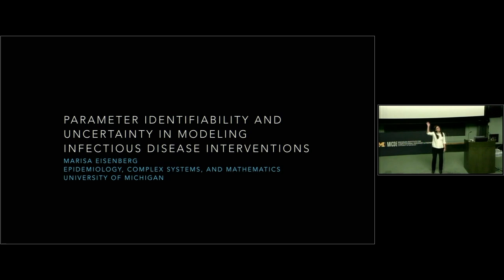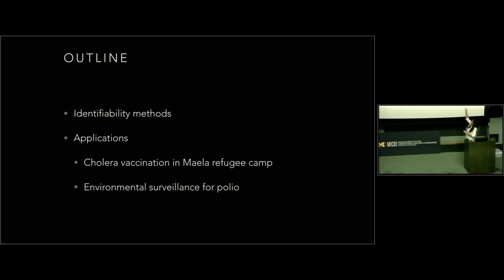So how many people are familiar with identifiability as a thing? A couple, but mostly not — okay, I like to get a sense of how to pitch it. So we're going to talk about identifiability, and then we'll talk about two specific applications: one on cholera vaccination in a refugee camp setting, and another on environmental surveillance for polio.